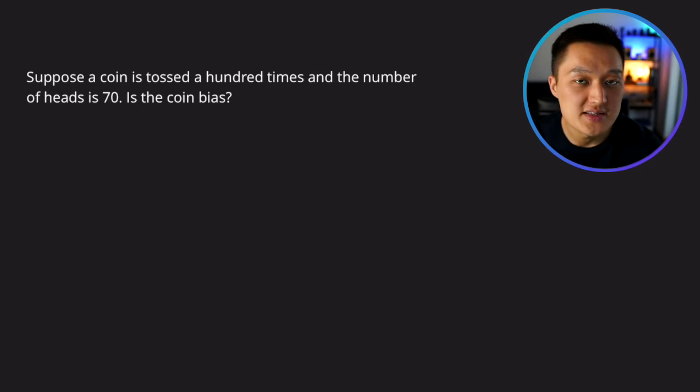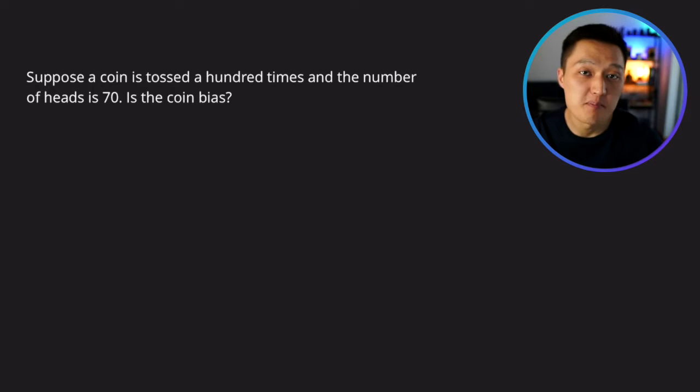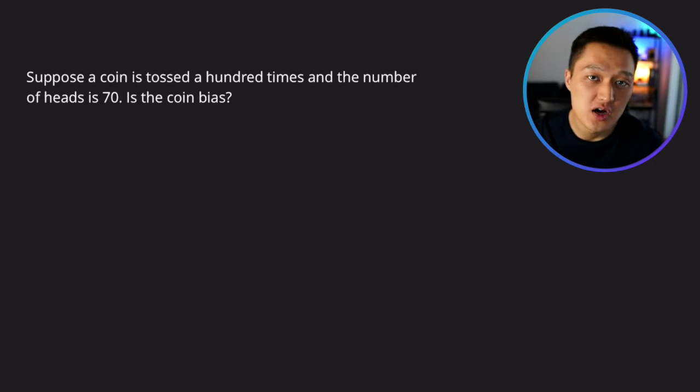Suppose a coin is tossed a hundred times and the number of heads is 70. Is the coin biased? How do we go about solving this problem?